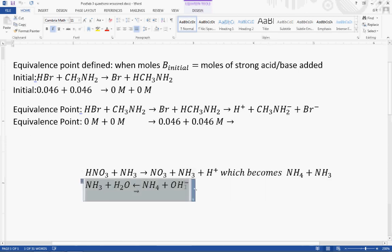So your final reaction will look like this: NH3 plus water becomes NH4+ and OH-, and that will help you find your concentration of OH using your Kb value because it's a base, versus your Ka value up here because it was an acid reaction. Down here, it's dissociating into a base.